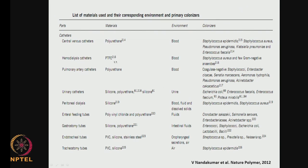Hemodialysis catheters use polytetrafluoroethylene (PTFE); the environment is blood, and you can have Staphylococcus aureus or gram-negative anaerobes. Polyurethane is used in pulmonary artery catheters — again in blood — where you can have coagulase-negative Staphylococcus, Enterococcus, Pseudomonas, or Acinetobacter. Urinary catheters made of silicone or polyurethane are in a urine environment where you can have E. coli, Enterococcus, or Proteus mirabilis. Peritoneal dialysis uses silicone in contact with blood and fluids, and can have Staphylococcus epidermis and Staphylococcus aureus. Enteral feeding tubes like PVC or polyurethane, generally with fluids, can also harbor various bacteria.